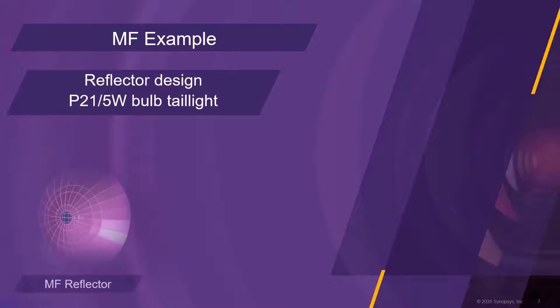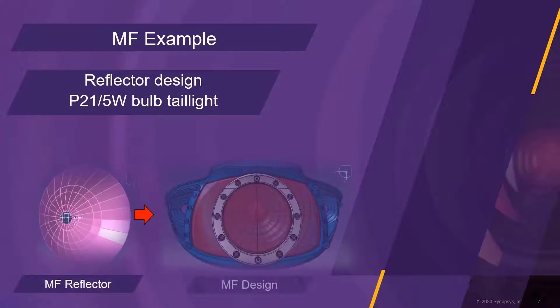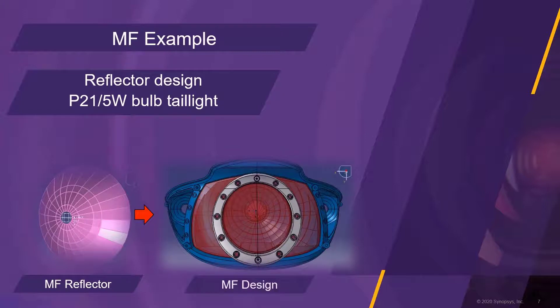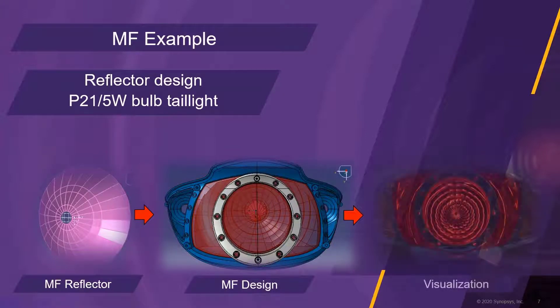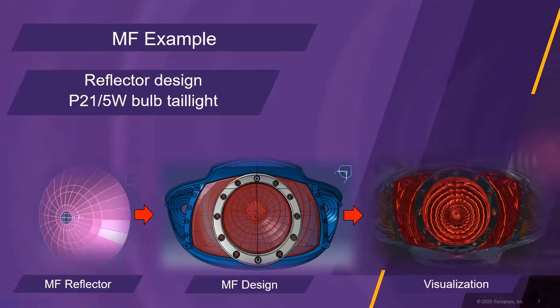The next example shows a dual-function tail light with a P21-5W light bulb. The specialty of this design is the round reflector, which still produces a rectangular light distribution in the far field. The visualization capabilities are particularly useful for the analysis of the lit appearance of signal lamps.